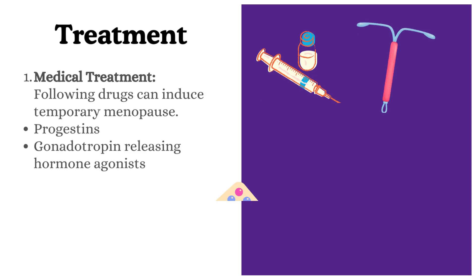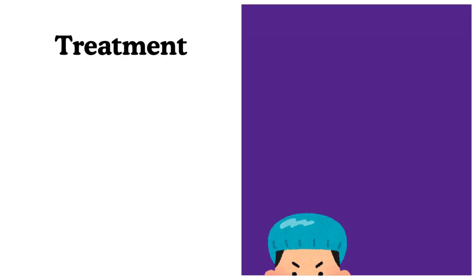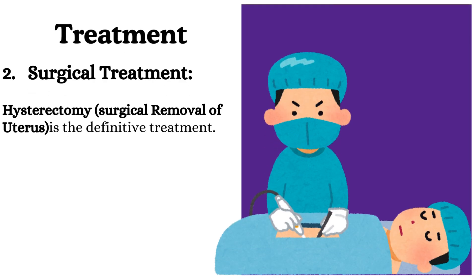Following drugs can induce temporary menopause: progestins and gonadotropin releasing hormone agonists. Number 2, surgical treatment — hysterectomy, surgical removal of the uterus, is the definitive treatment.